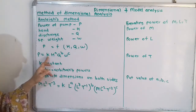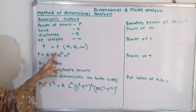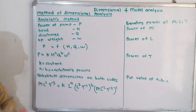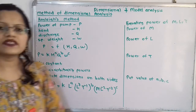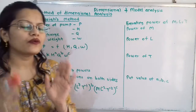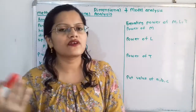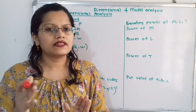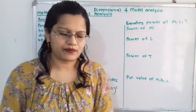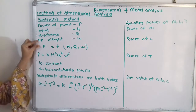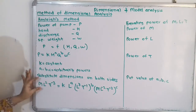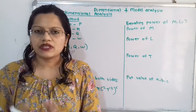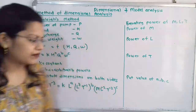Here K is a constant and A, B, C are the arbitrary powers we have to determine. Now we will substitute the dimensions in the form of fundamental dimensions — that is M (mass), L (length), and T (time). For power, as derived in my earlier video, the dimension is M·L²·T⁻³.